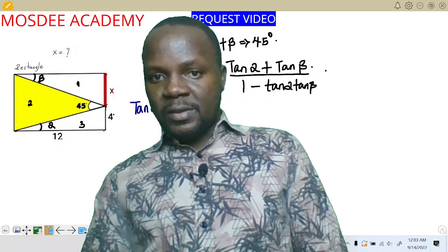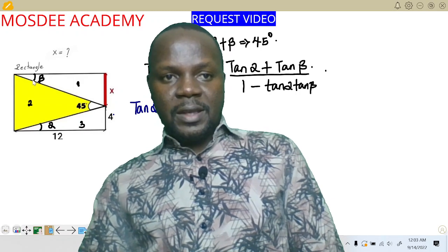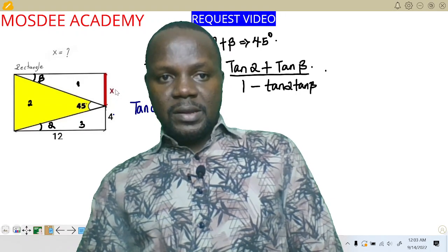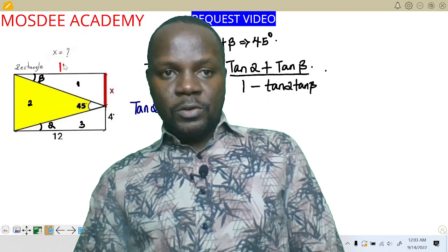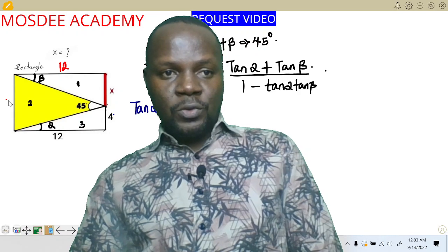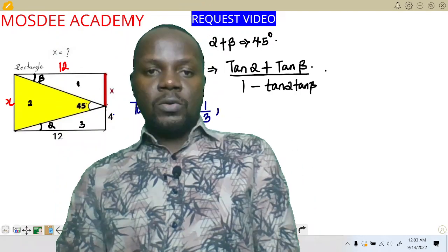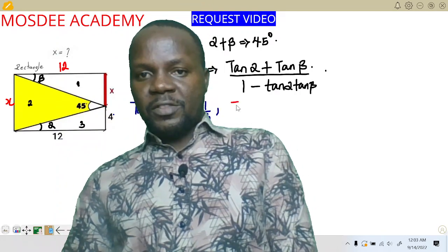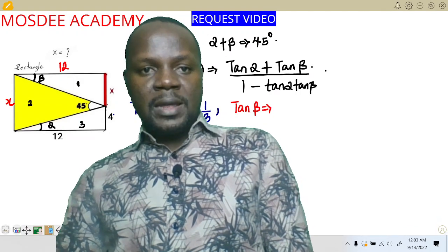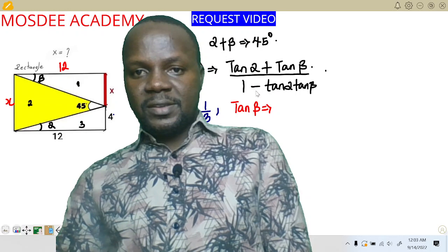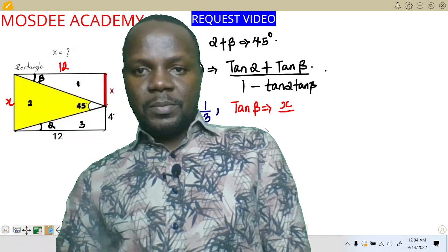Now if I want to do the second one — tan beta. This is the first triangle here. The opposite and adjacent here: from here to here is 12. This is a rectangle, so here is also 12. And here is also x. For the second triangle, tan beta equals — the opposite to beta is x, and the adjacent to beta is 12.